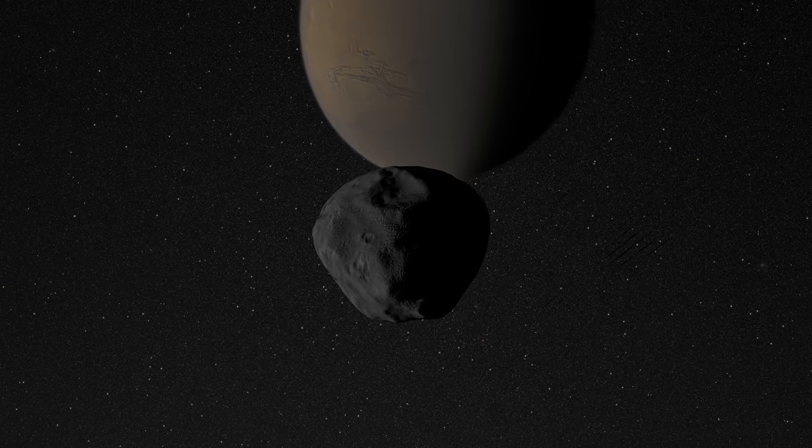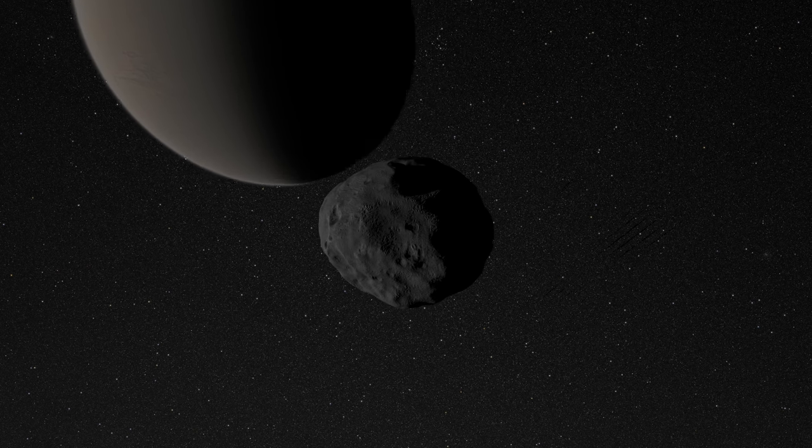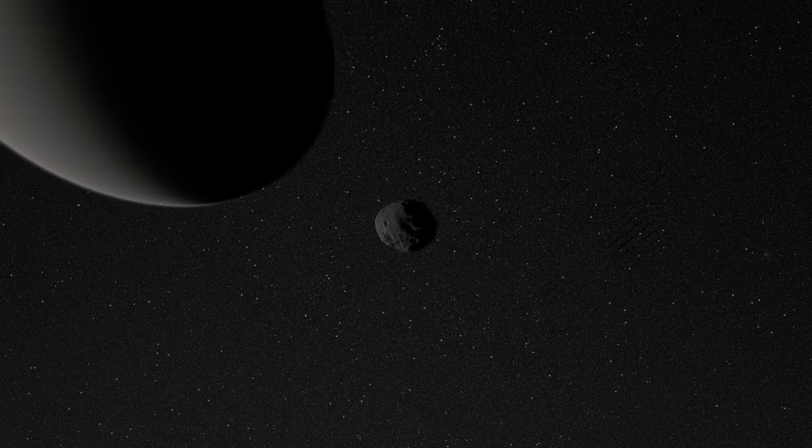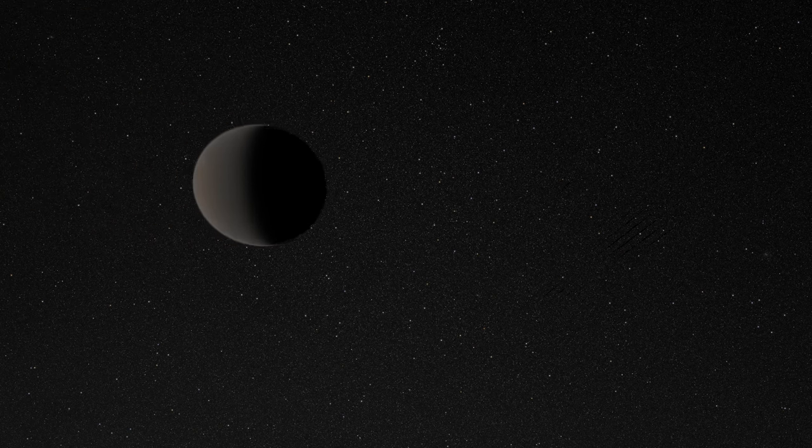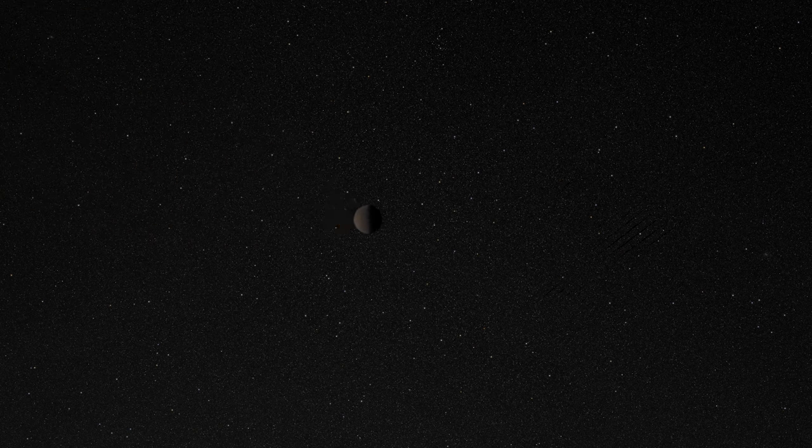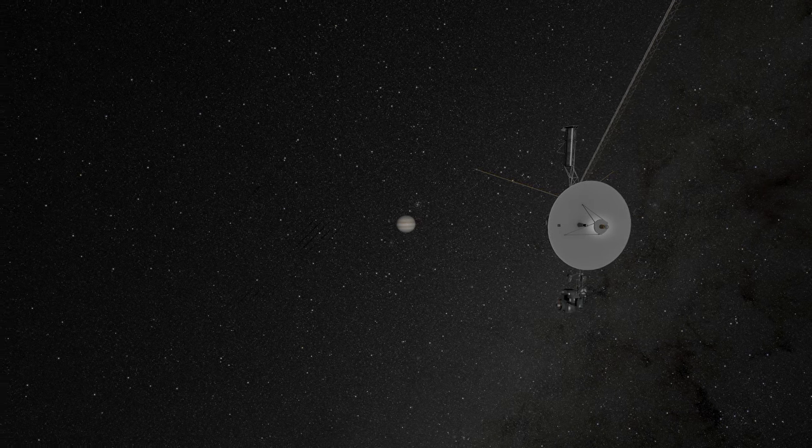Beyond the four rocky planets, one encounters the four gas giants of our solar system: Jupiter, Saturn, Uranus, and Neptune. Launched in 1977, Voyager 2 is the only space probe to have visited all four. Now we're going to hitch a ride with Voyager 2, back when it passed by the giants.